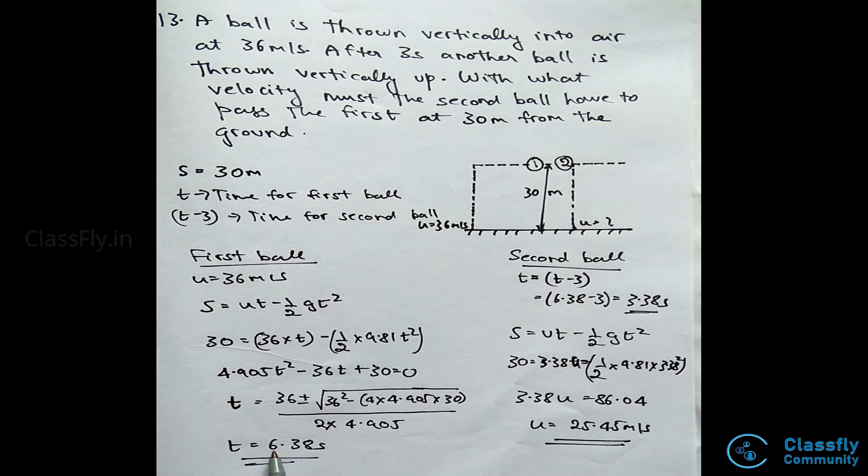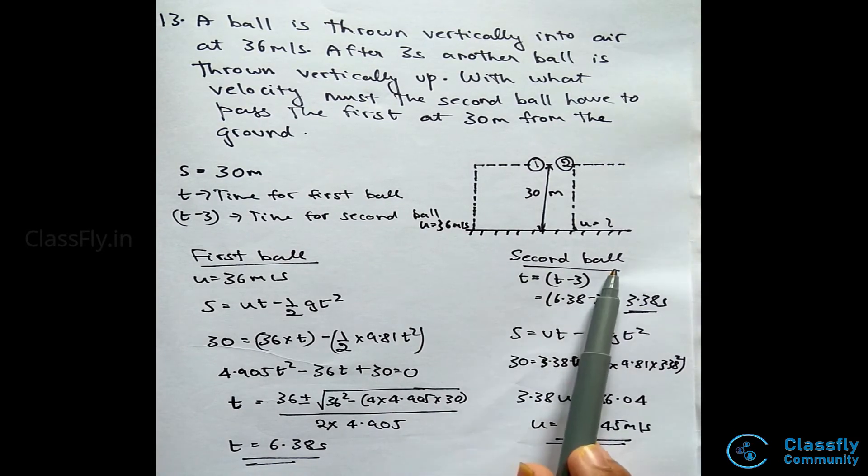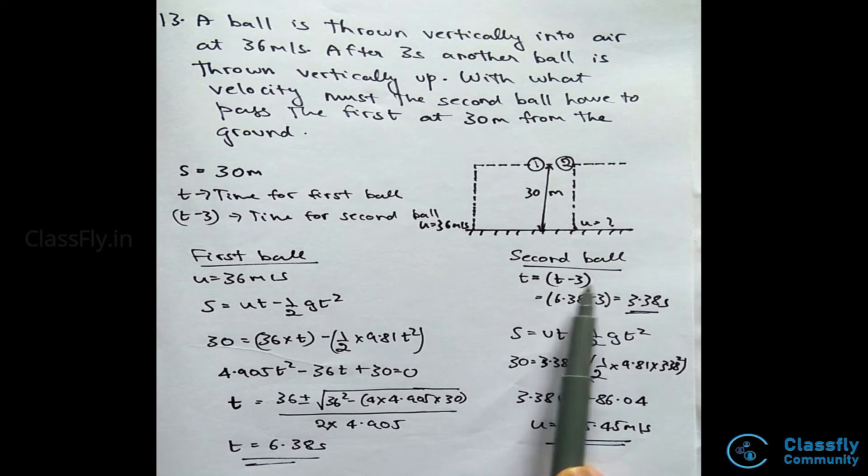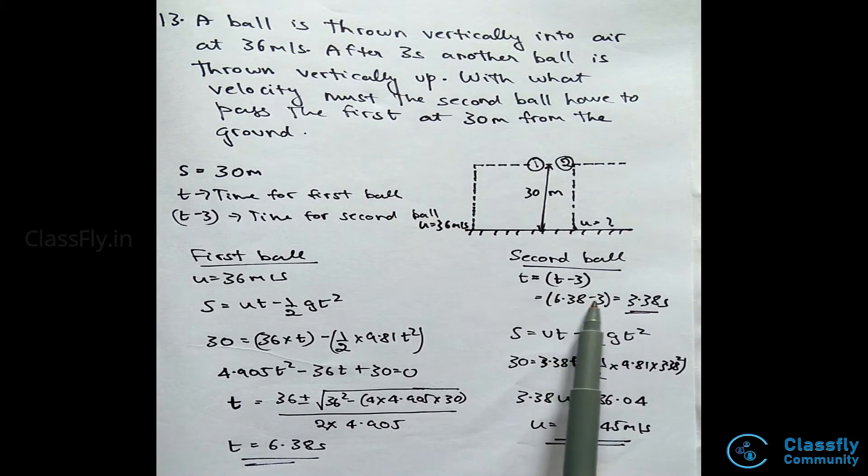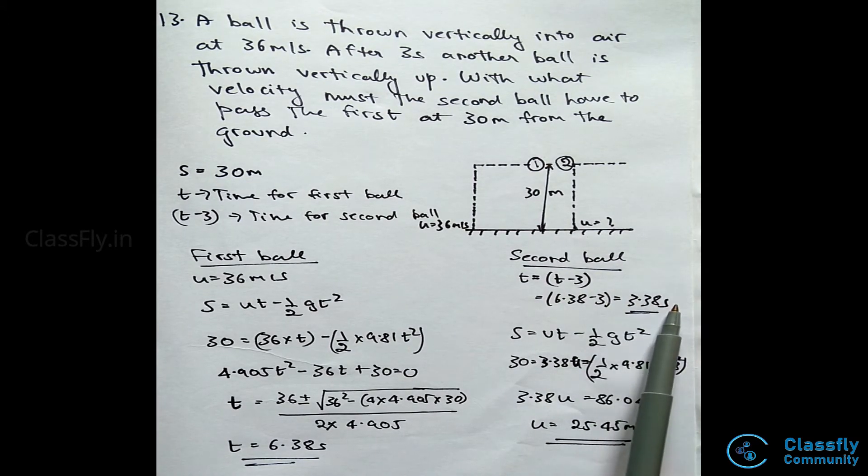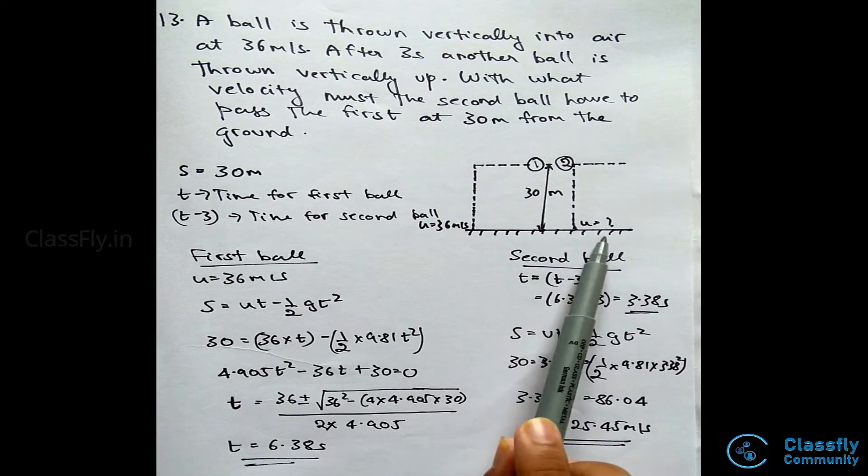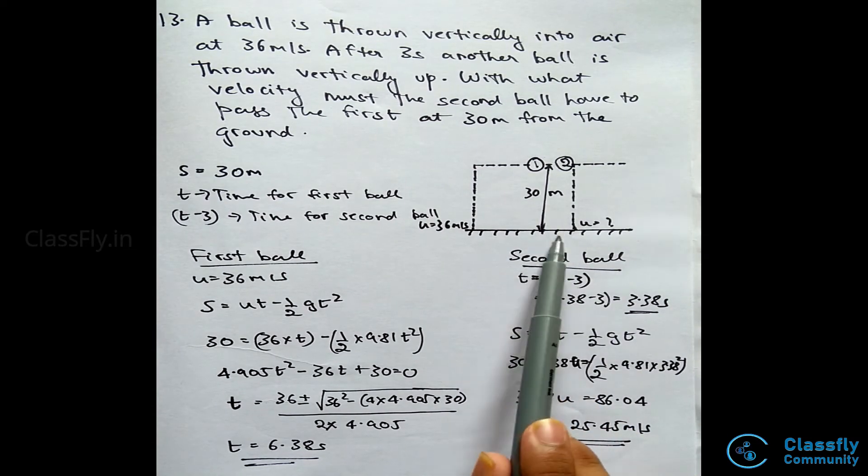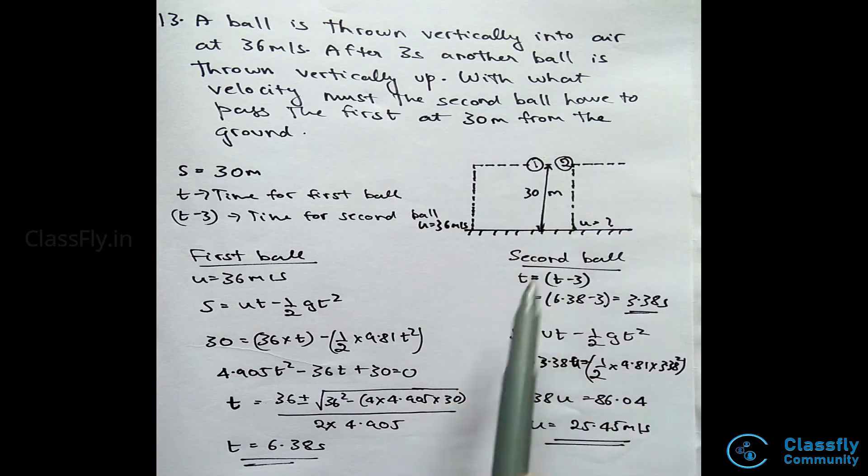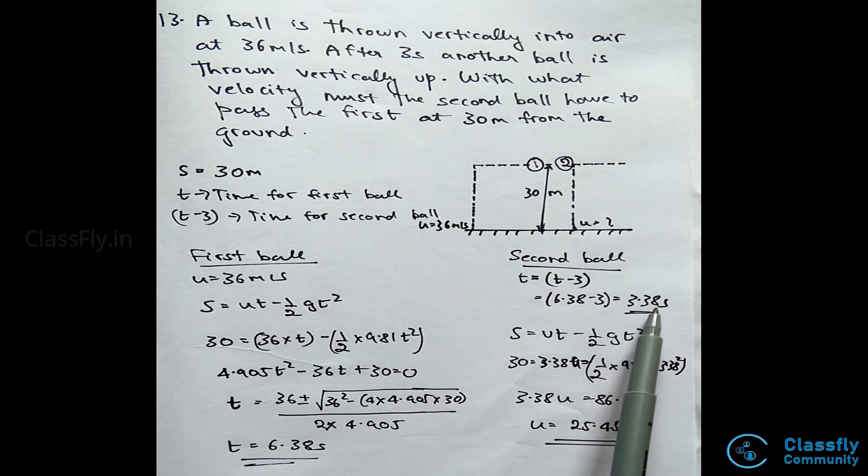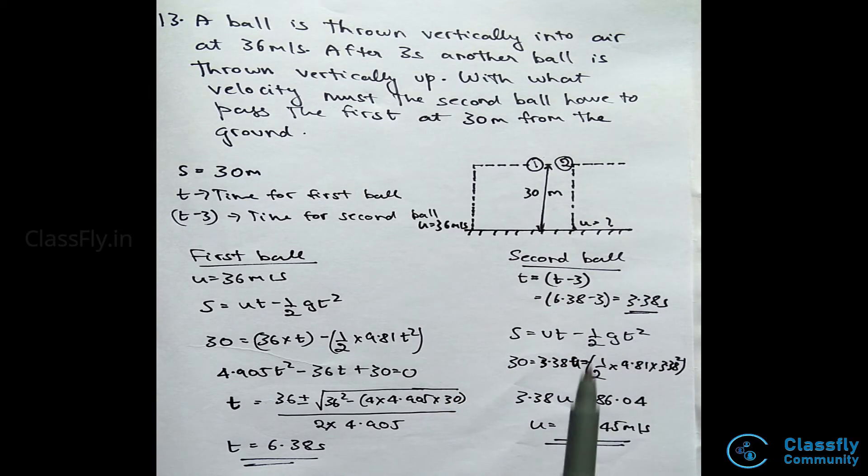Hence, the time taken for the first ball to reach the distance will be 6.38 seconds. Now for the second ball, the time should be t minus 3, that is 6.38 seconds minus 3, which will be 3.38 seconds. Hence, the ball should be thrown with a velocity such that it will reach the 30 meter point in a time of 3.38 seconds.